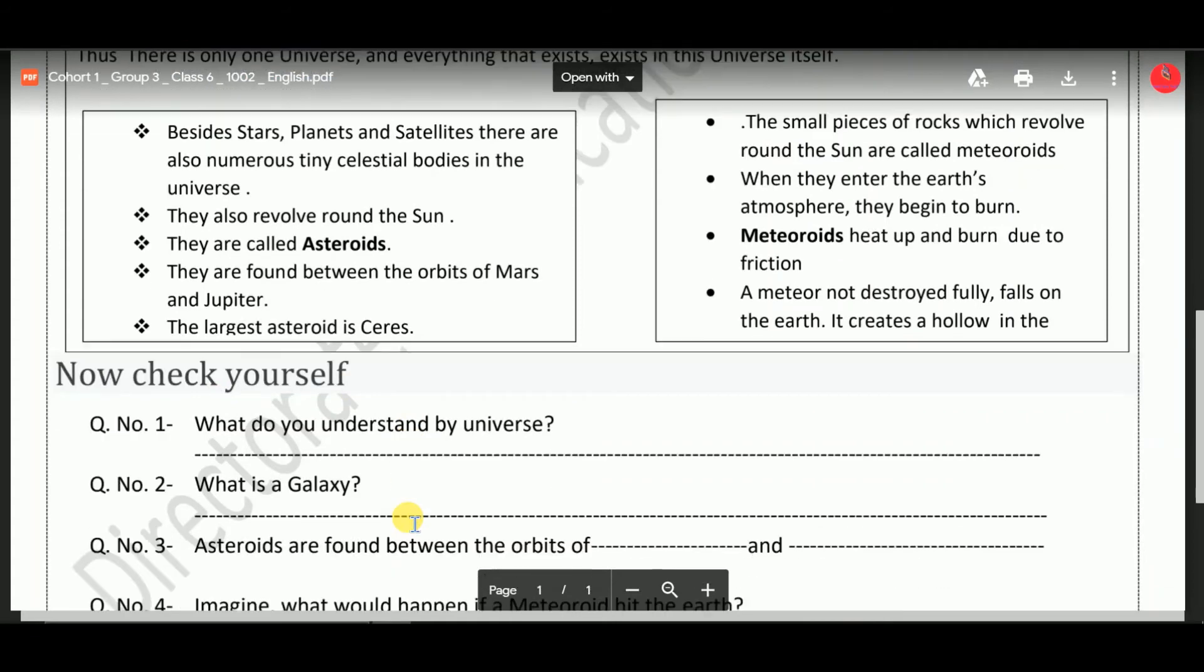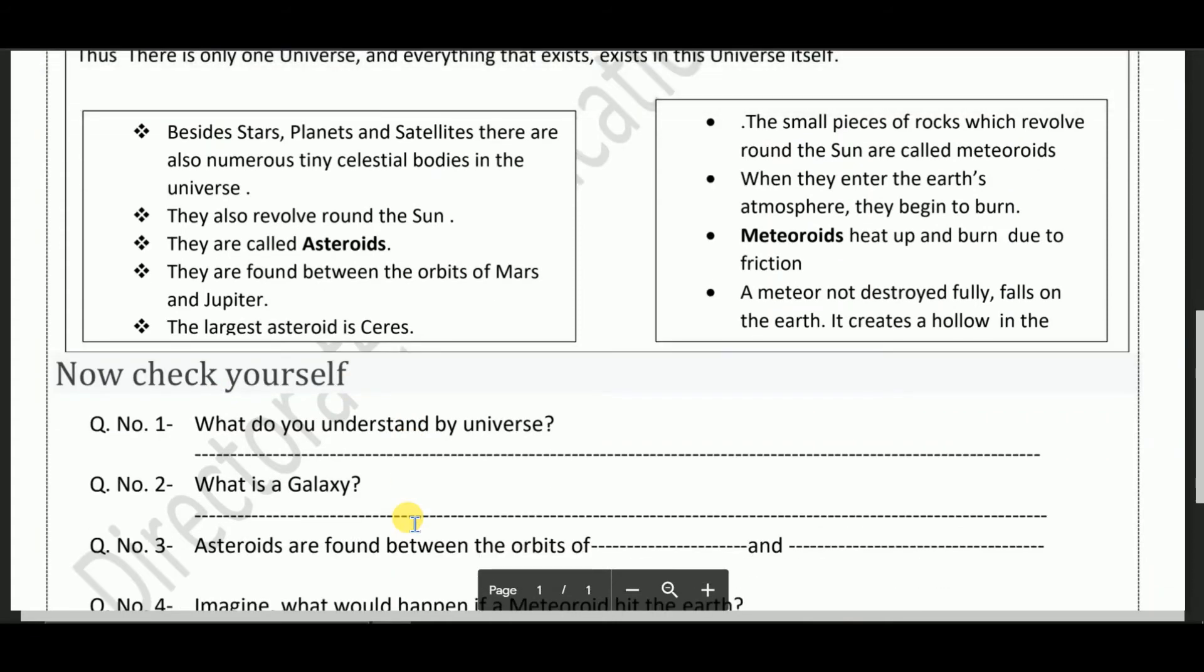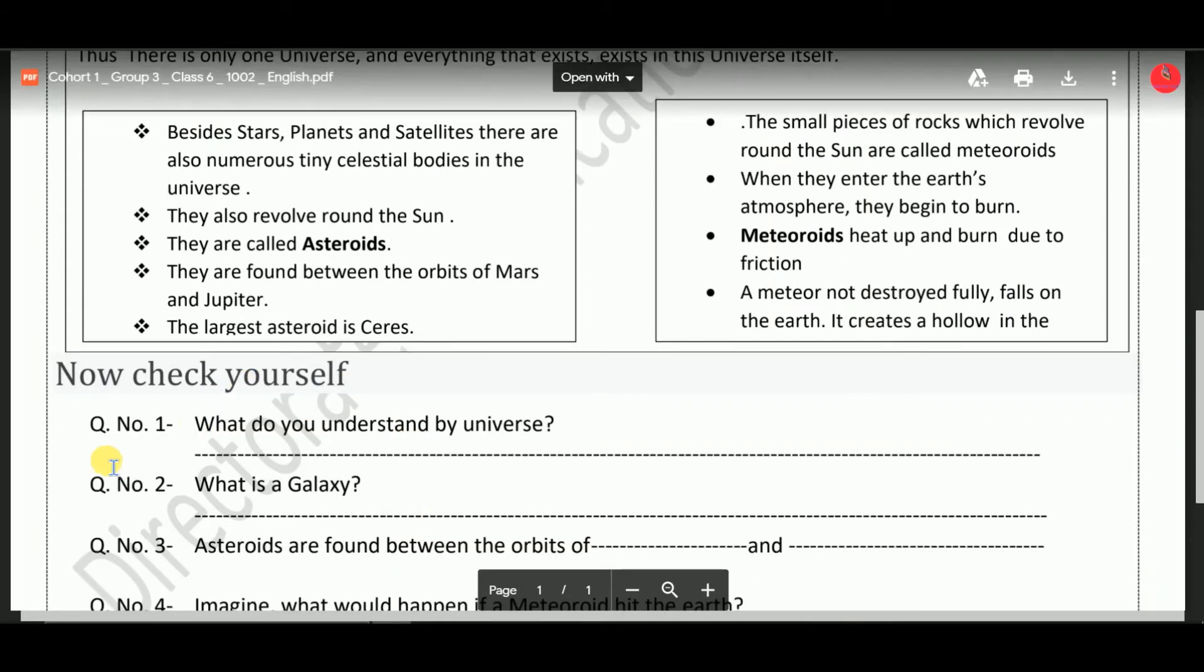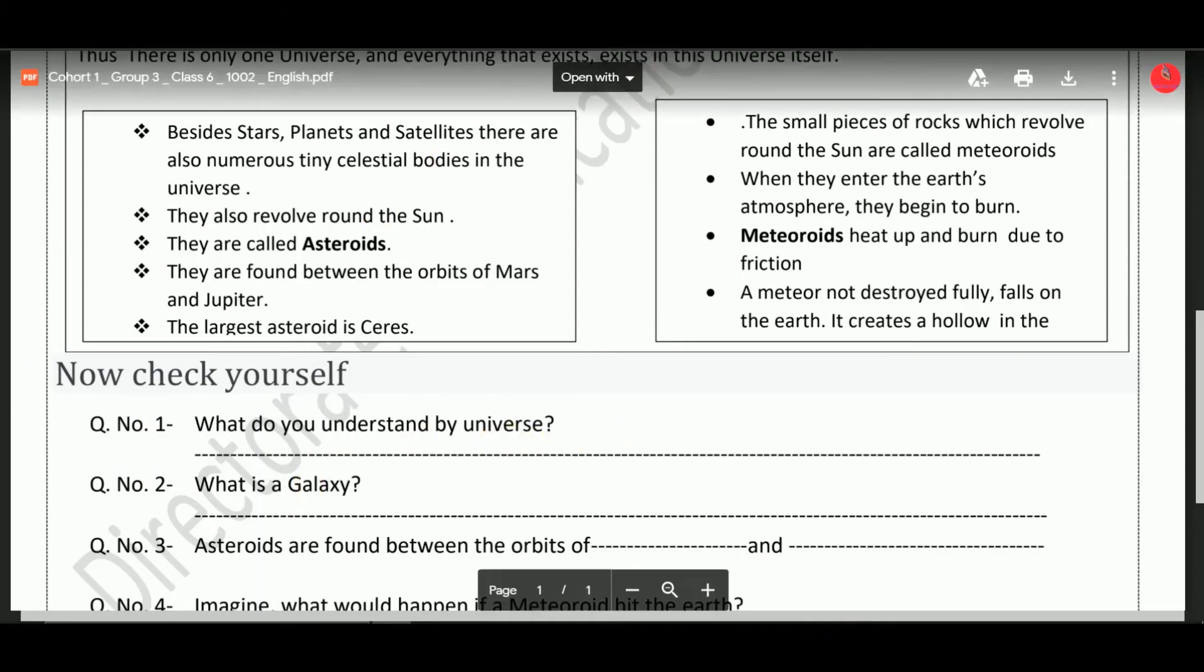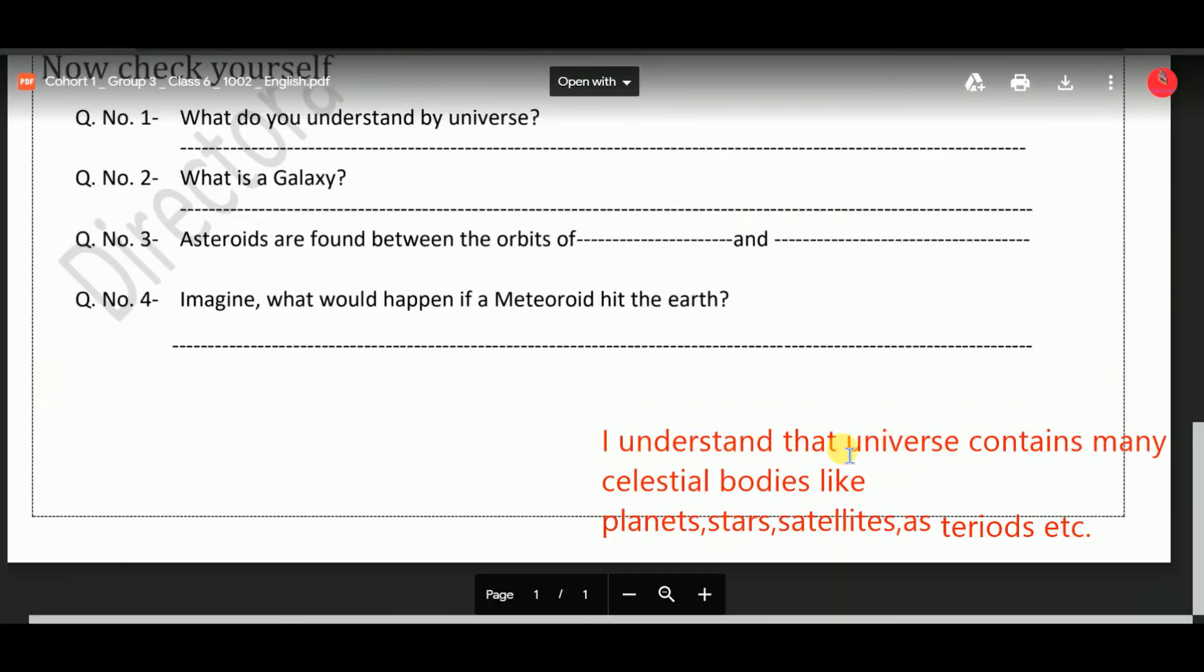Now, check yourself. Question number one: What do you understand by universe? I can tell you. Now I understand that the universe contains many celestial bodies like planets, stars, satellites, asteroids, etc.